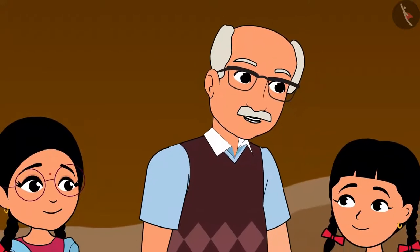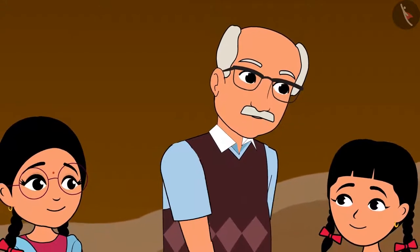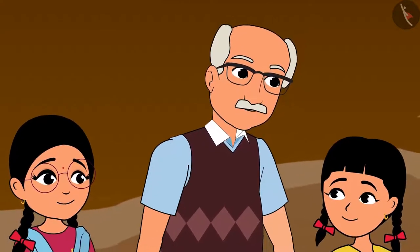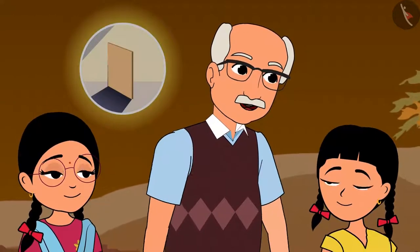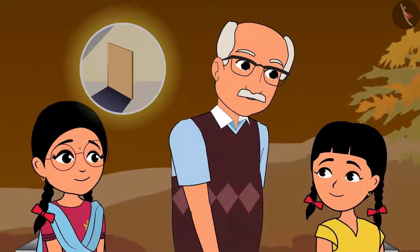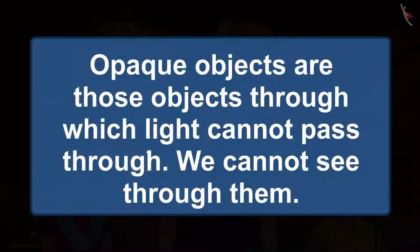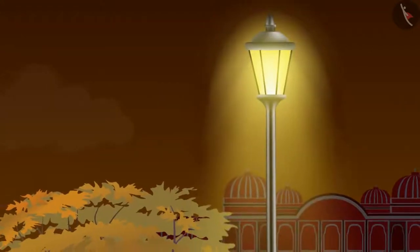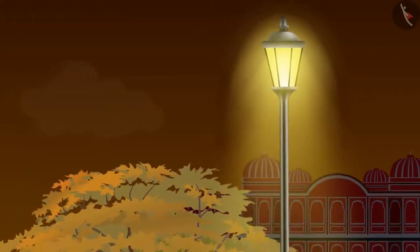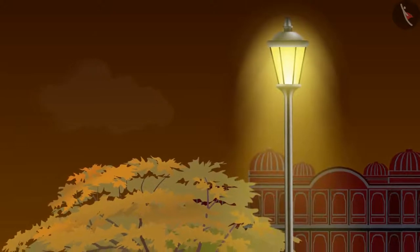Light travels in a straight line. Whenever an opaque object comes in between the light, a shadow of the object is formed. Like the light that is coming from the street lamp — it is falling straight.